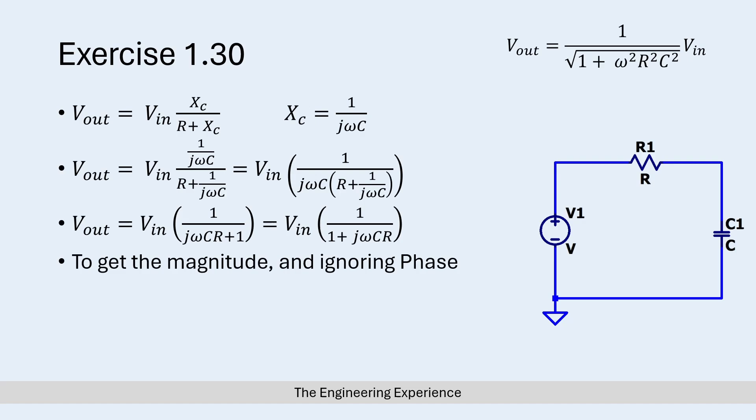Now to get the magnitude, and remember in this case we are ignoring the phase, we have to multiply the output signal by its complex conjugate and do the square root. This is given to us in the book, if you read about three or four paragraphs above.